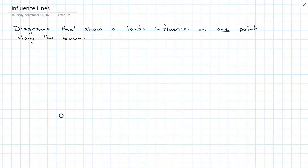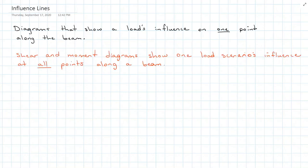Influence lines are diagrams that show a load's influence on one point along the beam. This is not to be confused with shear and moment diagrams, which show one load scenario's influence over all points along a beam.